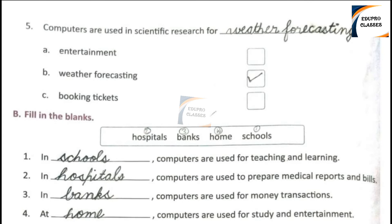Number 5: Computers are used in scientific research for blank. Option A: Entertainment. Option B: Weather forecasting. Option C: Booking tickets. Option B is the right answer.